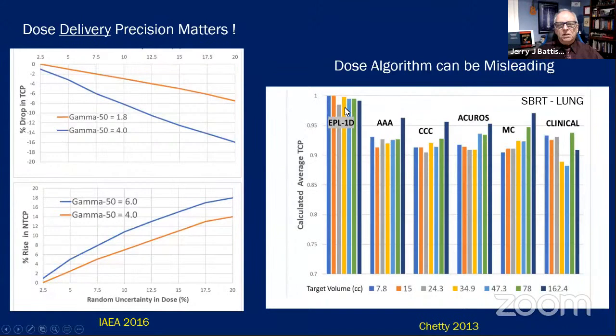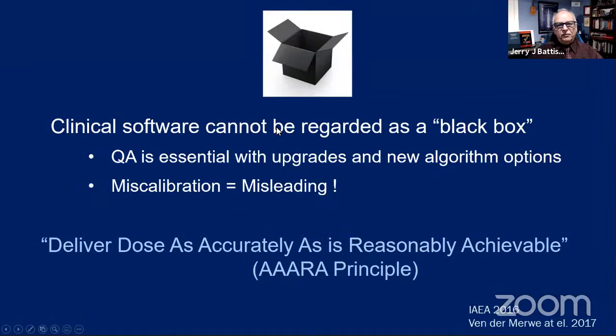Here is an interesting plot of calculated tumor control probability using a pencil beam method — it over-predicts the expected TCP. More modern algorithms predict a value closer to 95 percent, which agrees well with the clinical situation. If the algorithm is not correct it could mislead the radiation oncologist. I make a plea that clinical software cannot be regarded as a black box — as a medical physicist it is your duty to open the box and rigorously QA the software with every upgrade.